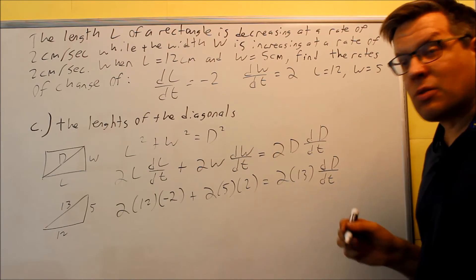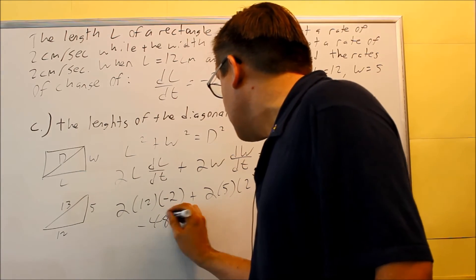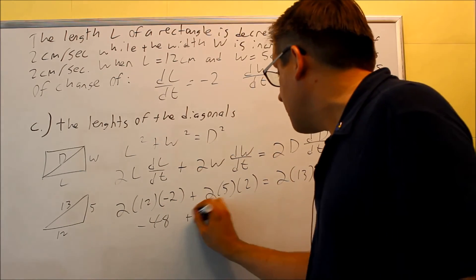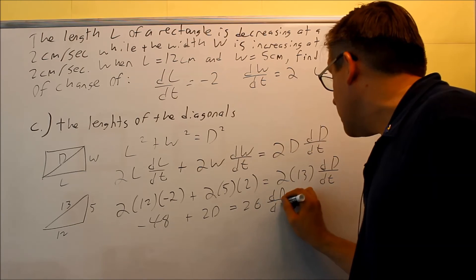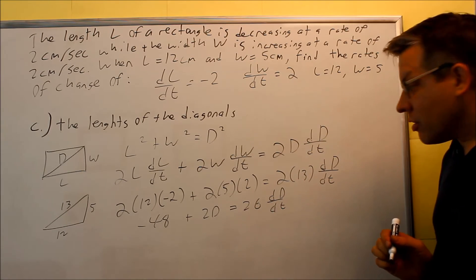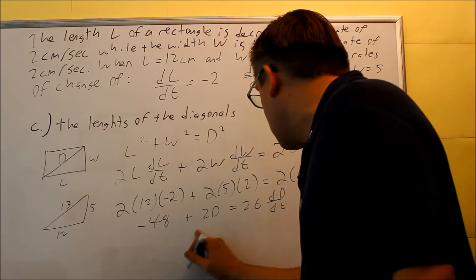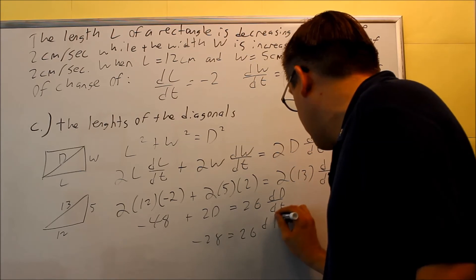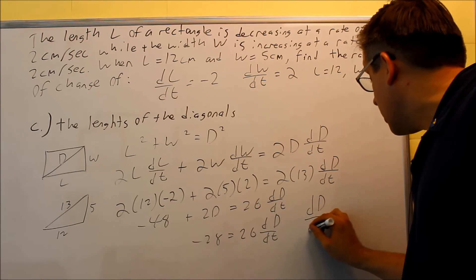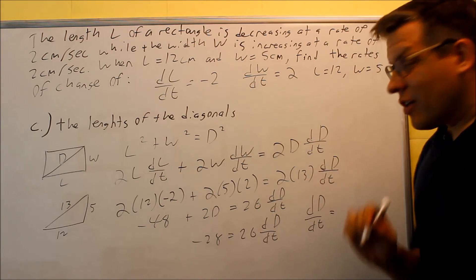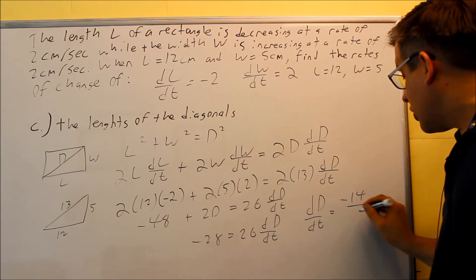Let's work all this out and simplify it. So I'm going to get, for this one, negative 48, and then for this I get 20 equals 26 dD/dt. I can add that together, get negative 28 equals 26 dD/dt. Then divide both sides by 26. The last thing we'll do is reduce our answer. So we get negative 28 over 26, divide both of those by 2. You're going to get negative 14 over 13.